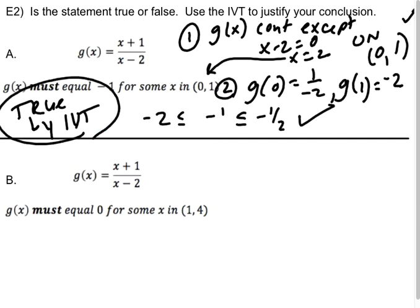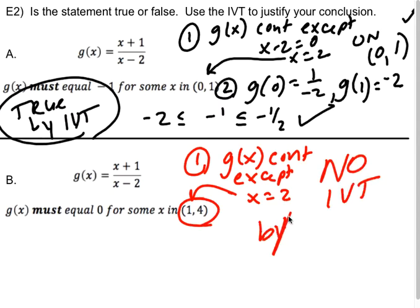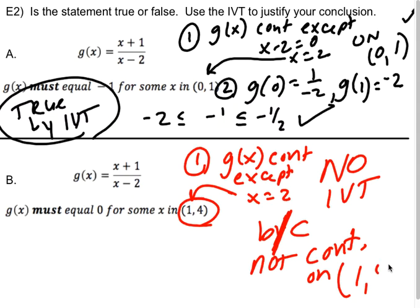The second one right away, I can see that it's false because I already did the work in part a. When I go to see if it's continuous, I know that g(x) is continuous except at x equals 2. Well, x equals 2 does fall in this window. So no IVT because it's not continuous on the window from 1 to 4. So B is false. I can't use the IVT on B.